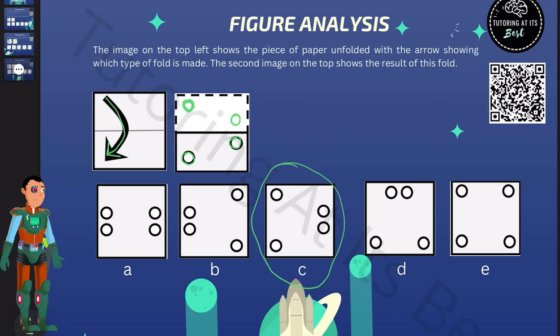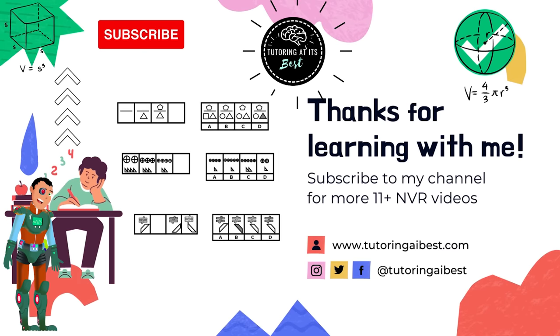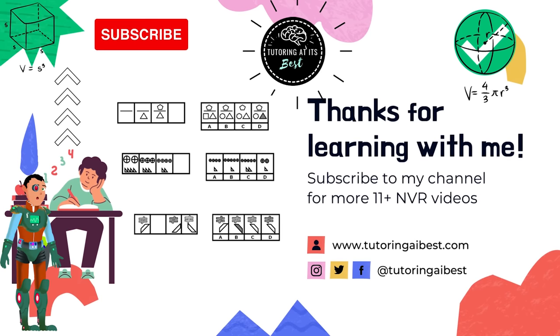And that's all for today's NVR figure analysis for 11 plus preparation. We hope you found this video informative and insightful. Remember, when solving type 2 questions, always keep in mind that the shapes on the folded side will appear upside down when unfolded. Don't forget to subscribe to our channel for more engaging content on 11 plus preparation. Thank you for watching and we'll see you in the next video.